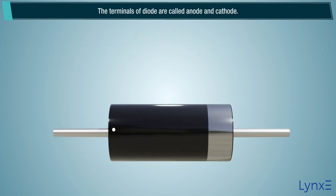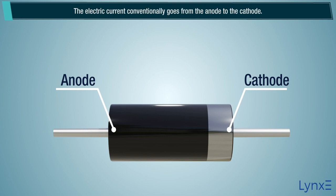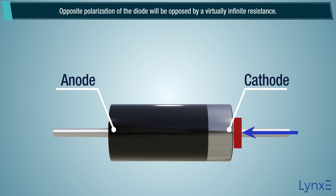The terminals of diode are called anode and cathode. The electric current conventionally goes from the anode to the cathode. Opposite polarization of the diode will be opposed by a virtually infinite resistance. The diode blocks the current, reducing it to zero.